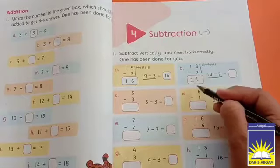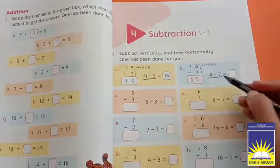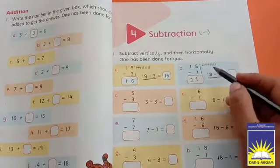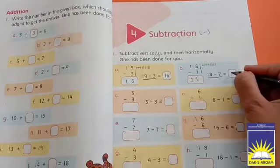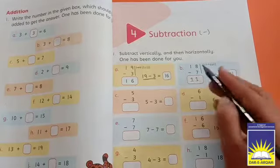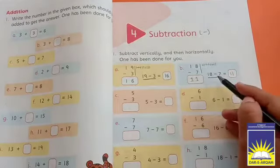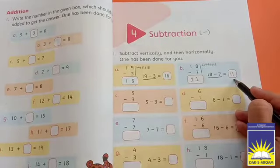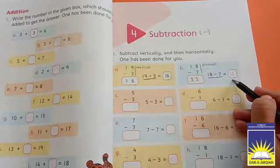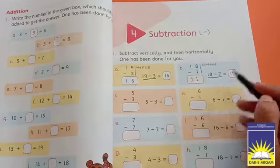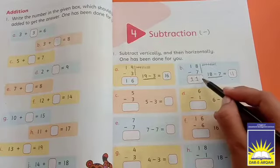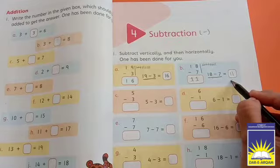Which number comes out? Eleven. Eighteen minus seven equals eleven. In the same way, we will do it horizontally: eighteen minus seven equals eleven. Because both numbers are the same, the answer will also be the same. If the numbers change here, it means the answer will also change. This is vertical subtraction and this is horizontal subtraction.